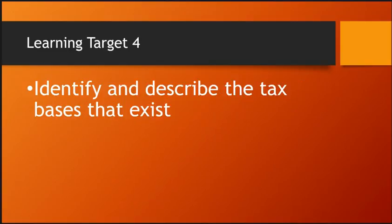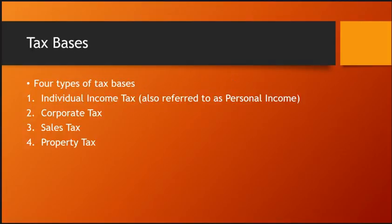Learning target four: identify and describe the tax bases that exist. There are four types. The first is the individual income tax, also called the personal income tax. You don't have to pay that in every state — if you move to Florida or Texas, they don't have an individual income tax, so you make more money there. For example, if the Detroit Lions offered a player $100 million and Miami offered the same, the player would actually make more with Miami because there's no state individual income tax in Florida.